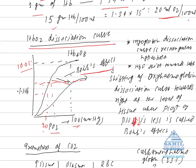The hemoglobin dissociation curve is sigmoid, but myoglobin — a hemoglobin found in muscle — has a curve of rectangular hyperbola shape. Similarly, this curve applies to adult hemoglobin, but in fetal hemoglobin, called HbF, the dissociation curve does not shift towards the right; it shifts towards the left.